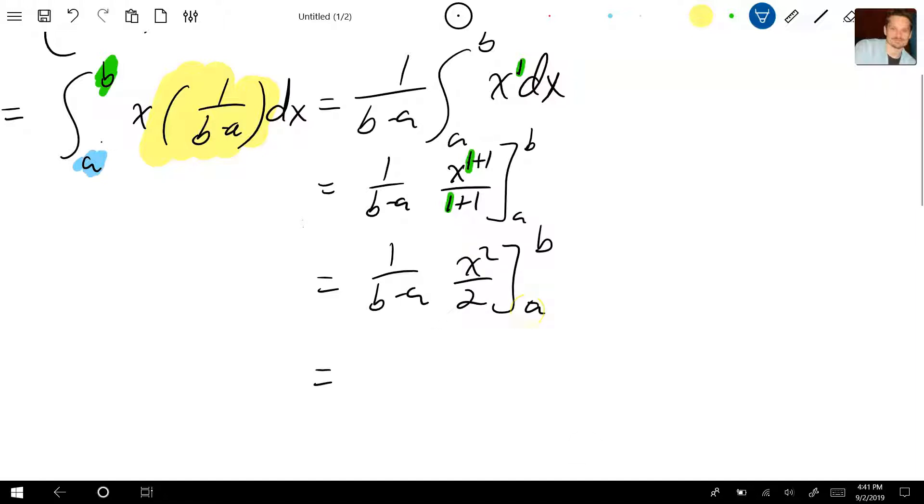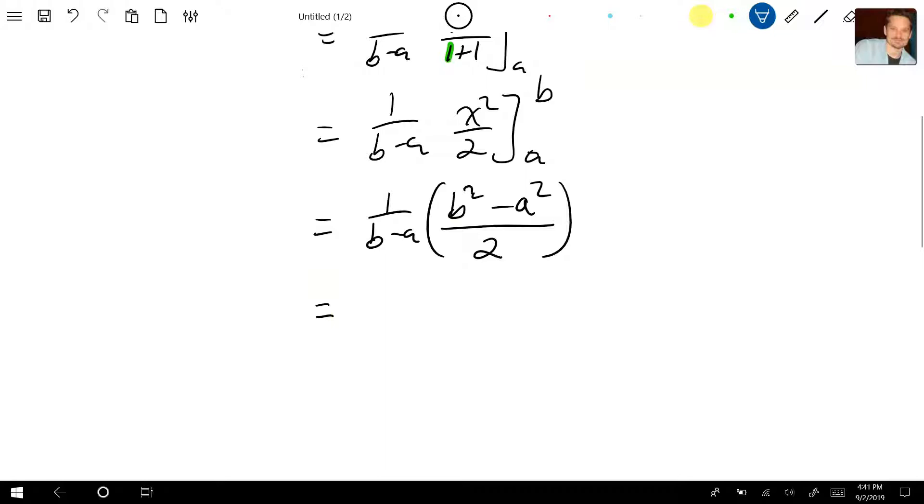Plug in the upper and lower limits. So it's 1 over b minus a, and this becomes b squared minus a squared divided by 2.